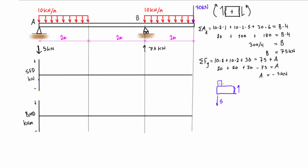We extend our free body diagram to include the distributed load — 2 meters at 10 kilonewtons per meter gives a total of 20 kilonewtons pressing down. At the next marker, we have 20 kilonewtons down plus 5 kilonewtons down, so the internal shear must be 25 kilonewtons up. This gives us negative 25 kilonewtons, so we go from negative 5 to negative 25 with a linear change.